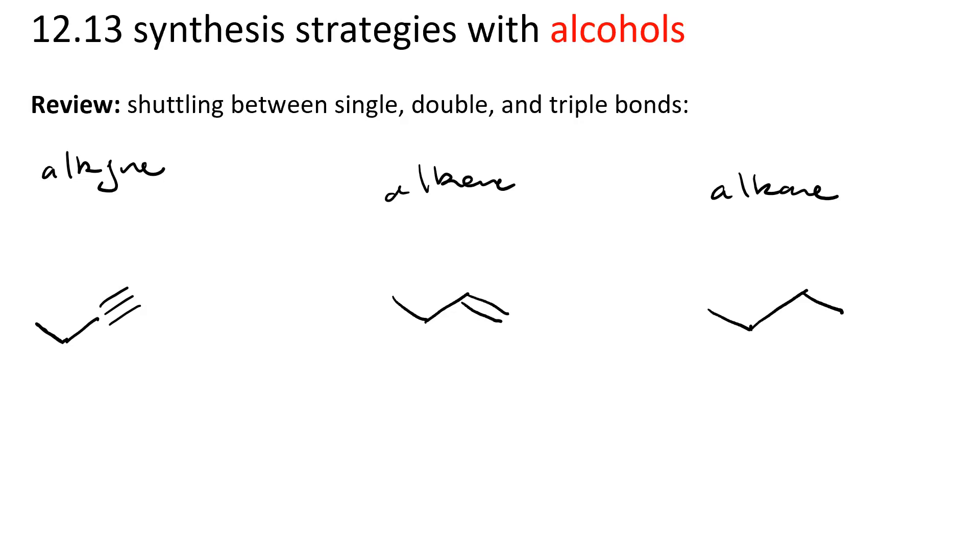How would you go from an alkyne to an alkene? You need to reduce one of the pi bonds, but not the second one. So you can do poison catalysts, H2 and Lindlar's, or you could also do the dissolving metal reduction, sodium metal in liquid ammonia.